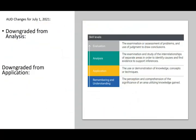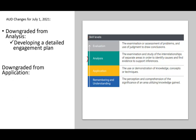First, we're going to look at topics downgraded from analysis to application. Simply put, there are certain topics that used to be tested at the analysis skill level — now they're downgraded to application. As a CPA candidate, that's better for you. It means you don't have to know the information in as much detail, and any simulation given will be relatively easier. Many students asked what 'downgraded' means, so I'll show you specifically.